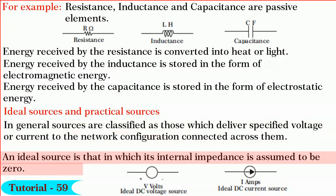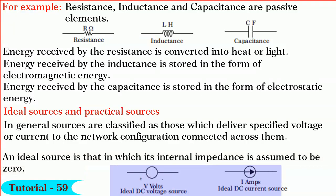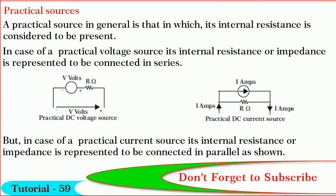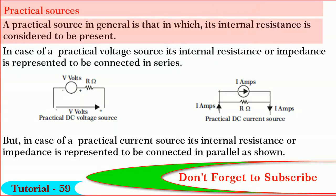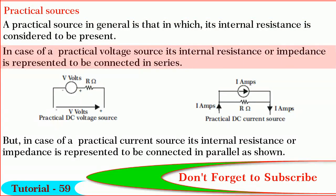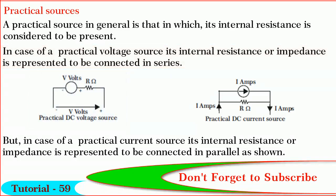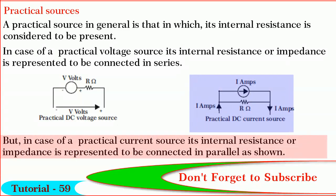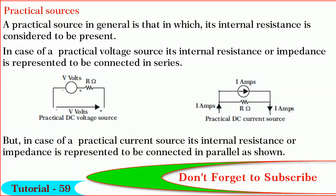An ideal source is that in which its internal impedance is assumed to be zero. Representation of ideal voltage and current sources are shown in figure. Whereas a practical source in general is that in which its internal resistance or impedance is considered to be present. In case of a practical voltage source, its internal resistance or impedance is represented to be connected in series as shown. Hope you understood it.